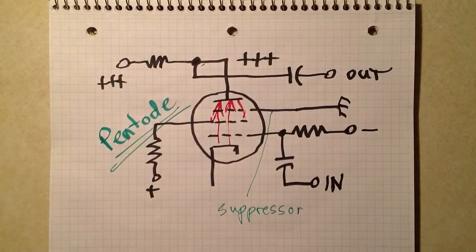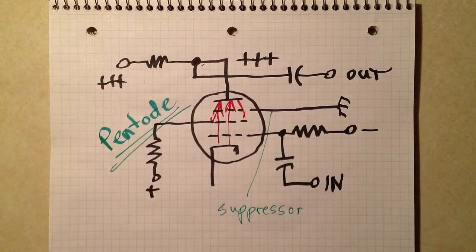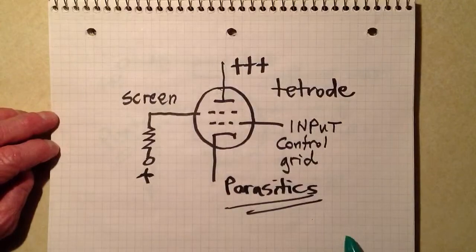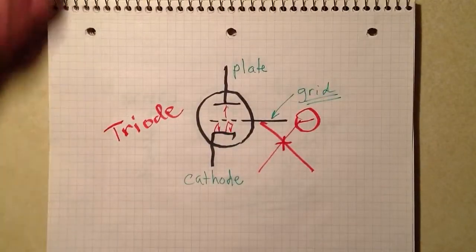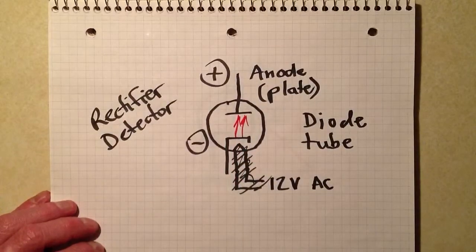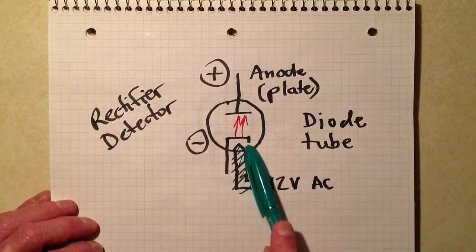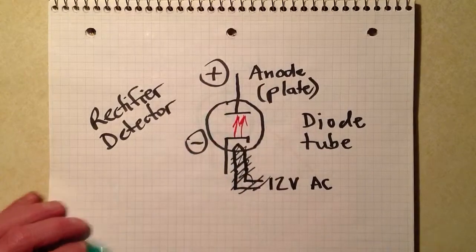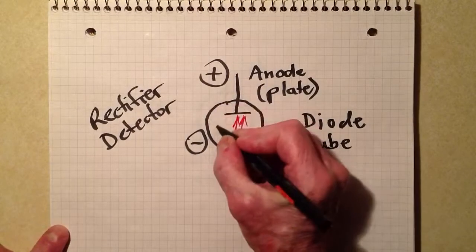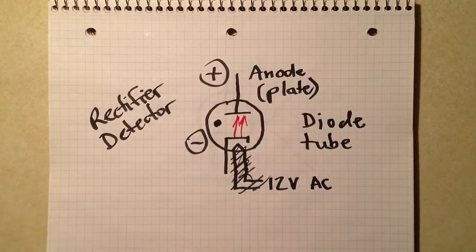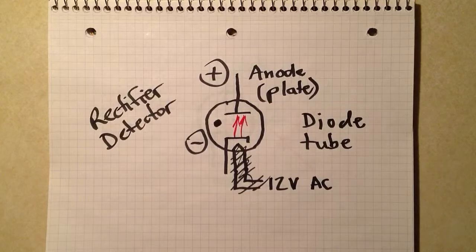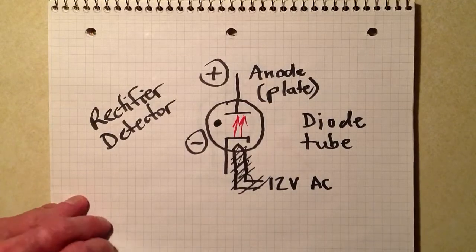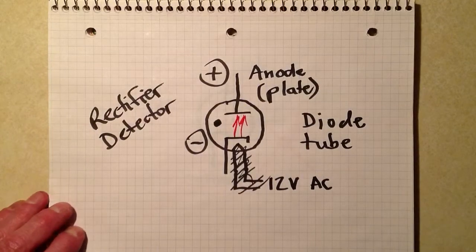Those are the basic symbols for vacuum tubes used primarily for amplification in radios, old radios. The pentode, the tetrode, the triode. And once in a while in power supplies, especially extreme high-voltage power supplies, you will find old-fashioned diode tubes, either the high vacuum type vacuum diode tube, or a gas-filled vacuum tube called a mercury vapor rectifier. Of course, nowadays with all the furore about mercury and its toxicity, you might have a little more trouble finding one of those tubes.